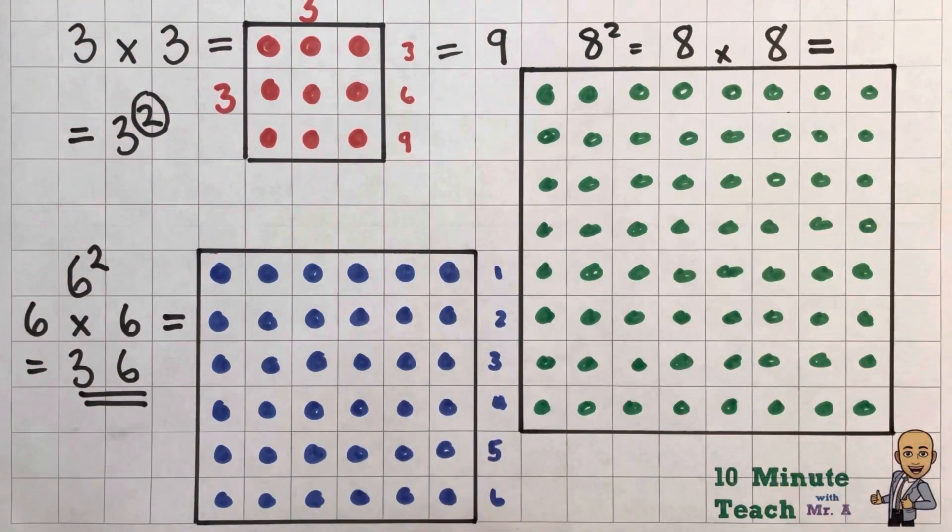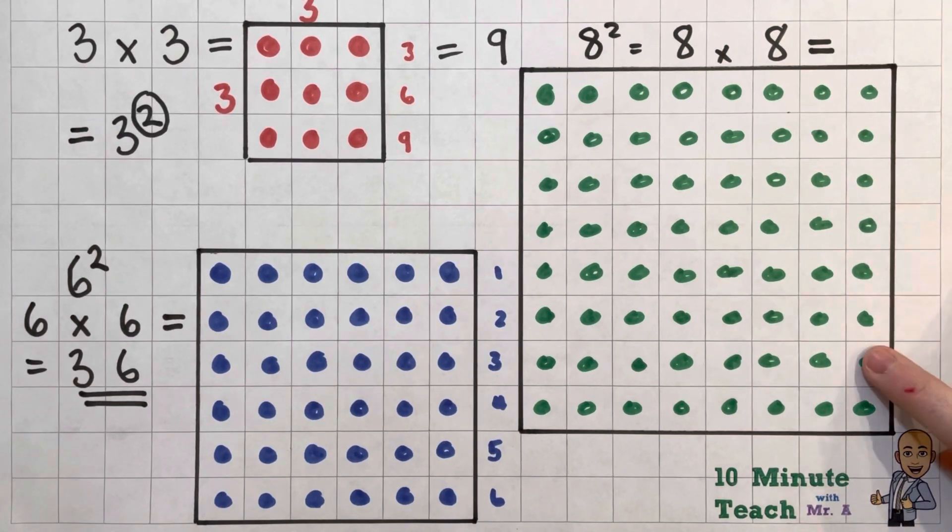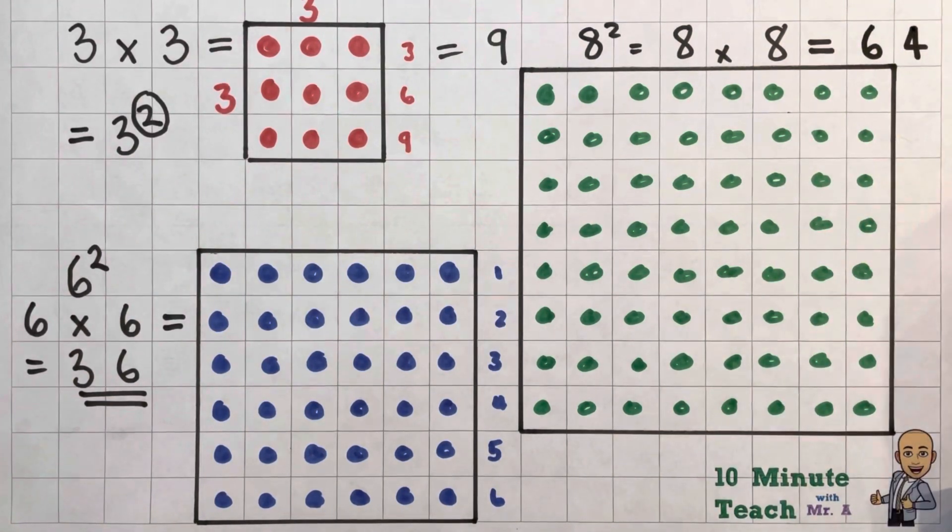So let's use our times table song then. So 8, 16, 24, 32 and 40, 48, 56, 64. So it is 64. And I like to remember this one. I ate and I ate till I was sick on the floor. 64. But there you go.